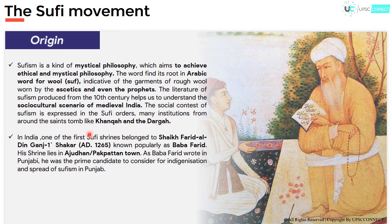In India, the first Sufi shrine belongs to Sheikh Farid Al Din Ganj Shakhar, also known as Baba Farid. Their shrine lies in Ajodhan, or Pakpattan town. Because Baba Farid wrote in Punjabi, the spread of Sufism in Punjab was natural, making it a prime candidate for the movement.